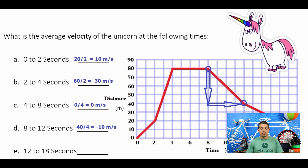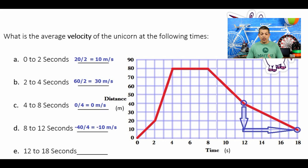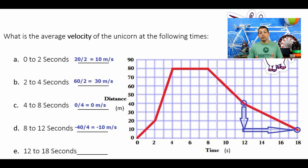Our last interval is 12 to 18 seconds. We're at 40 meters, and by 18 seconds we've gone all the way down to 10 meters. So 40 minus 10 is negative 30 meters in 6 seconds — negative 30 divided by 6 equals negative 5 meters per second.